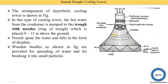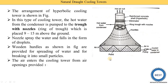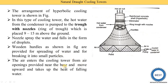On the wooden hurdles, water comes into contact and spreads further — the water droplets are divided into smaller particles. Air enters the cooling tower from openings provided near the base and moves upward, taking up heat from the falling water.